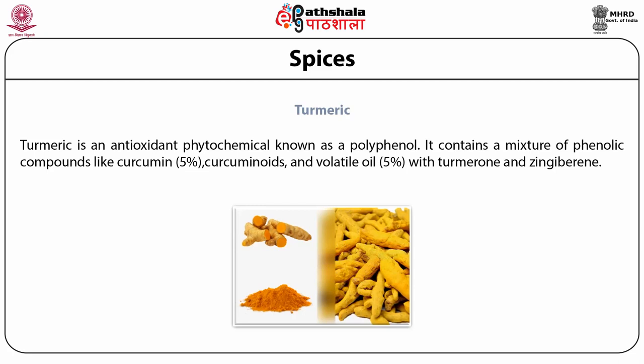In addition to the above compounds, there are certain other components including vitamins C and E, and several carotenoids. The oil present in the rhizome is responsible for the aromatic taste and smell, and consists of alpha-phellandrene 1%, sabinene 0.6%, cineol 1%, borneol 0.5%, zingiberene 25%, and sesquiterpene 53%.